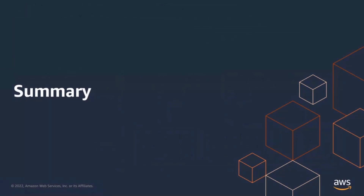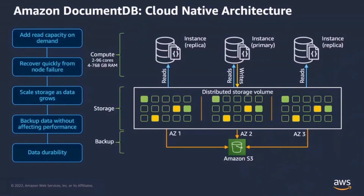In summary, you've seen five common challenges in scaling traditional database deployments and how DocumentDB addresses them. The cloud-native architecture with separation of compute and storage allows you to: one, quickly add read capacity on demand within eight to ten minutes with no data movement; two, quickly recover from node failure in about 30 seconds; three, automatically scale storage as data grows with no user interaction; four, continuously back up data without affecting performance; and five, achieve high data durability regardless of how many compute instances are in the cluster.